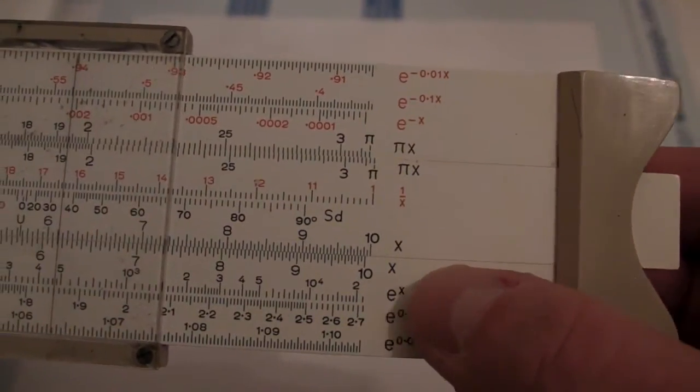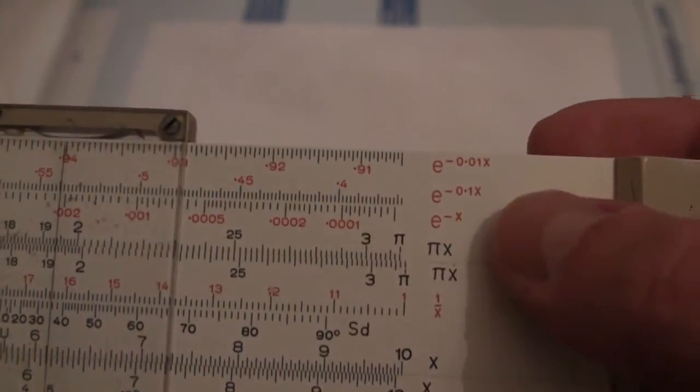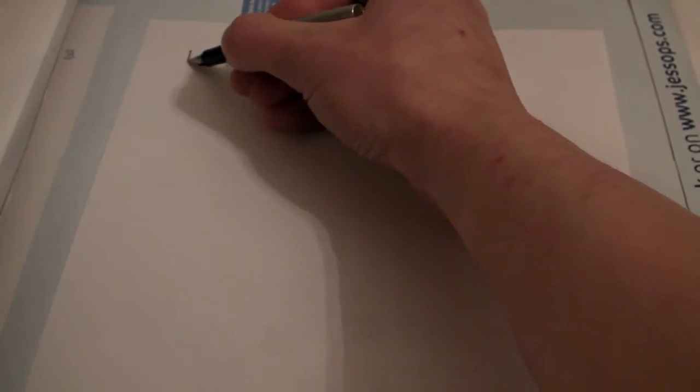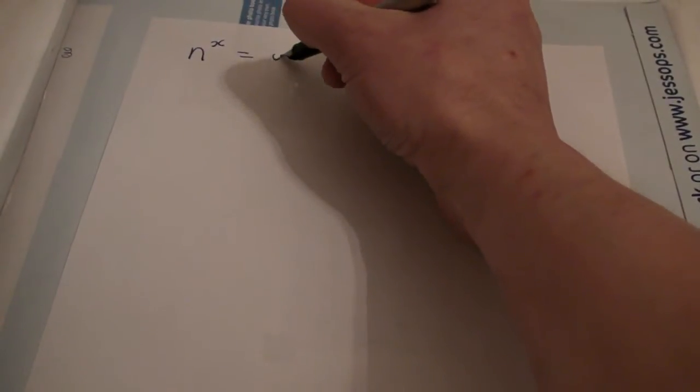And the labels on the side, e to the x, e to the 0.1x, e to the 0.01x, and then e to the minus x at the top. Well, I'm no mathematician, so I don't even know the technical terms, but it's for working out things like n to the x equals y.